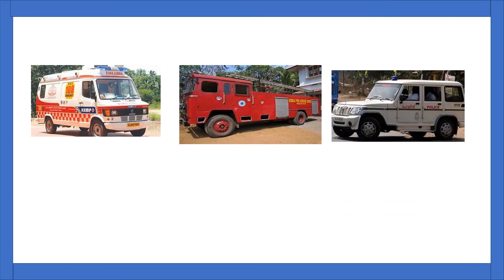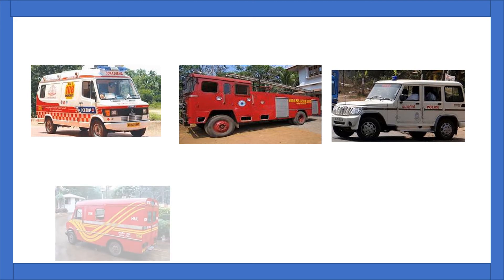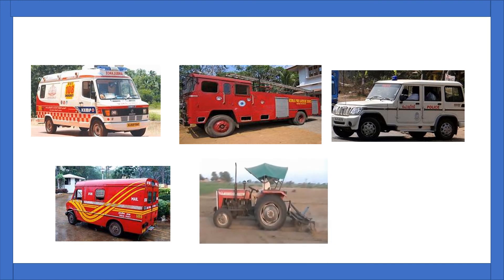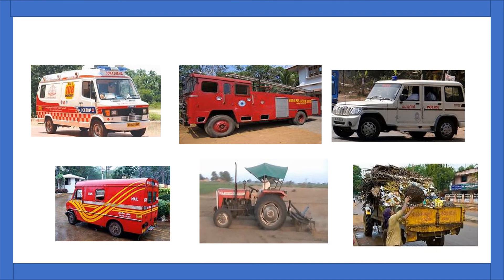Police van — a vehicle used by our police force who maintains law and order in our society. Postal van is meant for collecting and distributing letters, mails, etc. from different places. A tractor is a vehicle you can see mostly in villages, used in farming. Garbage trucks collect and take away waste accumulated in streets and from households. Ambulance, fire engine, police van, postal van, tractor, and garbage trucks are examples of vehicles used for specific purposes.